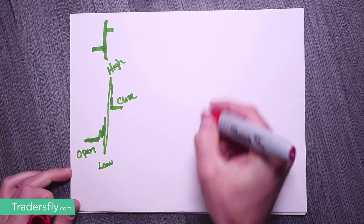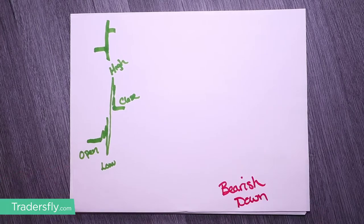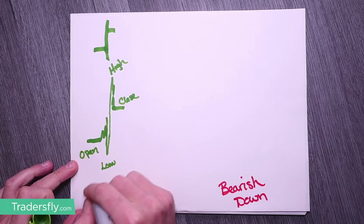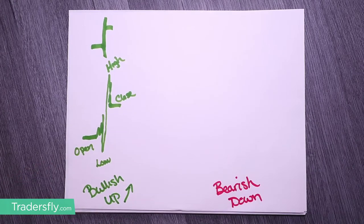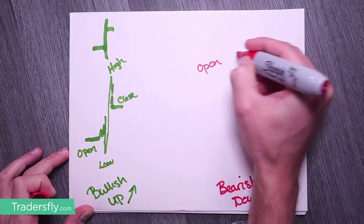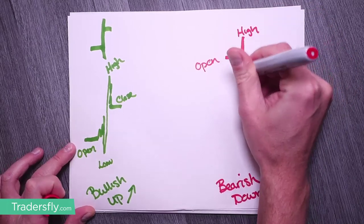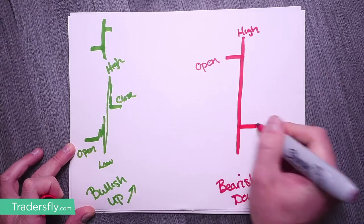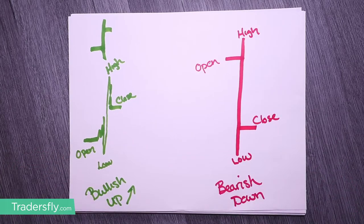If we look at the red version — the bearish, or down move — it's the same concept. We open somewhere, wiggle around, might make a little high somewhere here, continue throughout the day, might make a low, and then we close somewhere here lower. That's really all it is. That's the basics behind candlesticks and people make it so difficult. I made it so difficult when I first got started. This is the simple way to look at it. It's just things moving around.